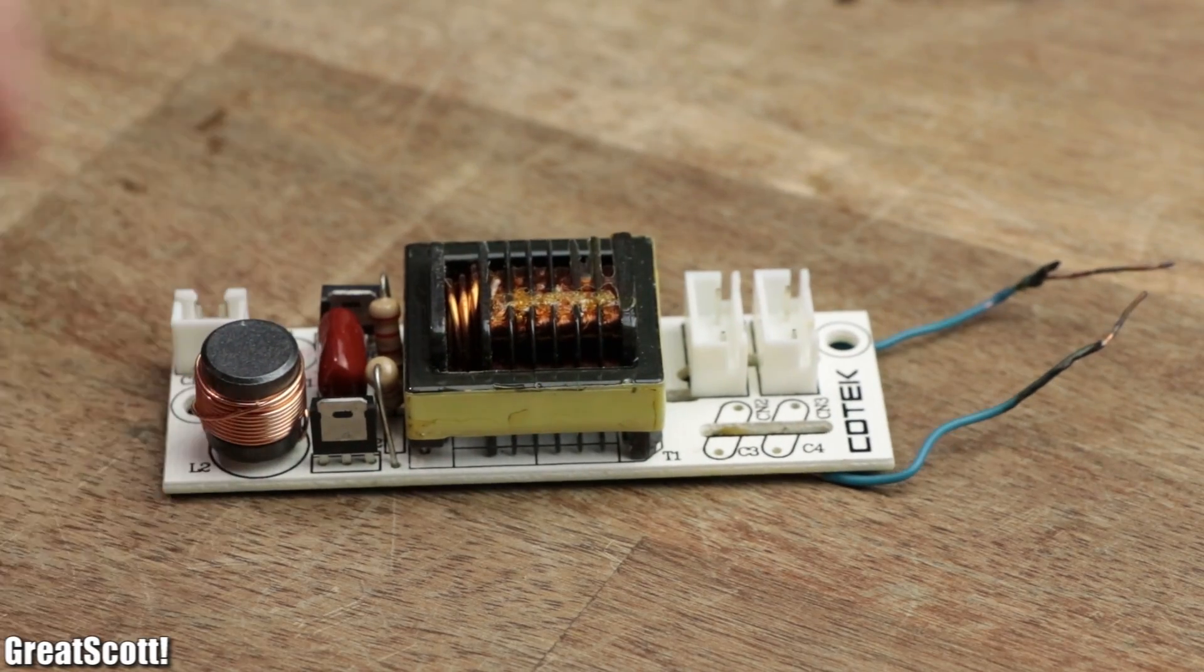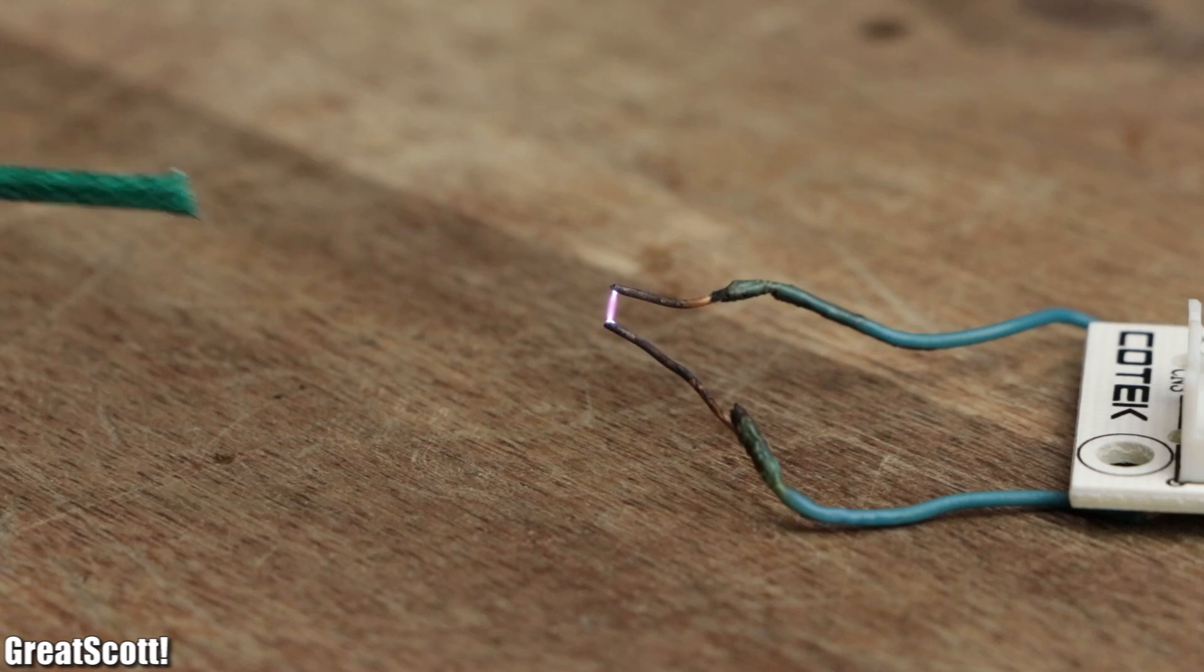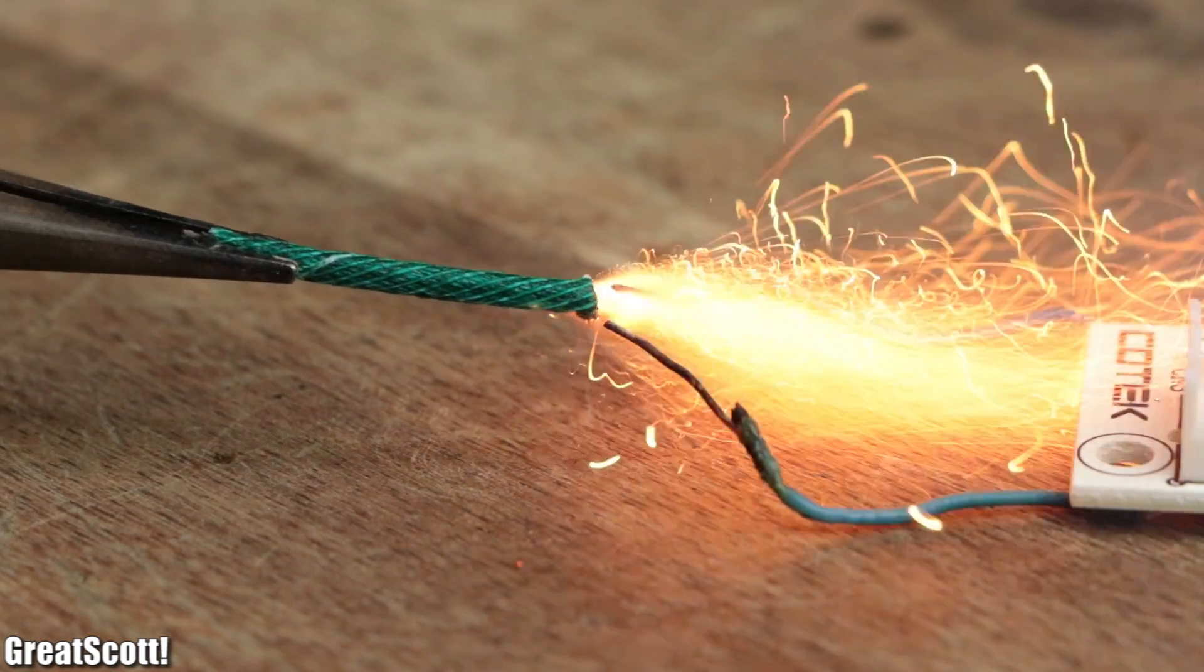In a previous episode of Hacked, I showed you how I modified a CCFL inverter in order to create an electric arc that can ignite fireworks.